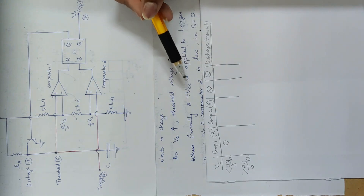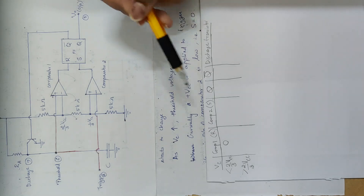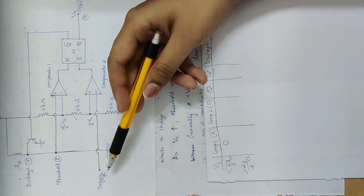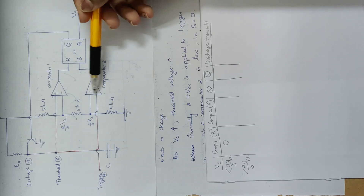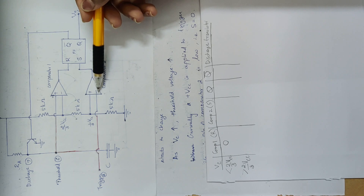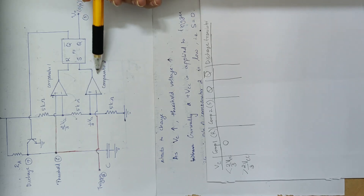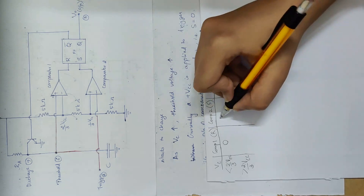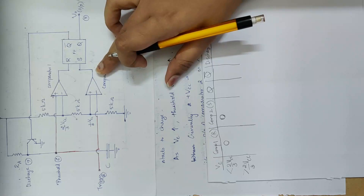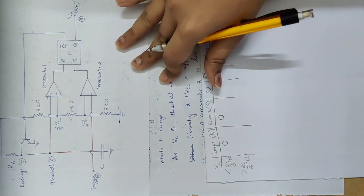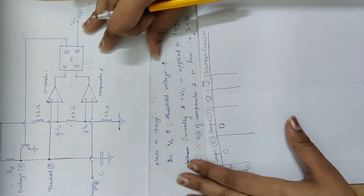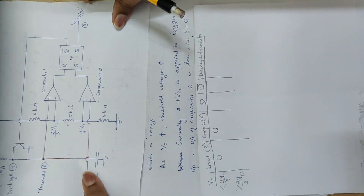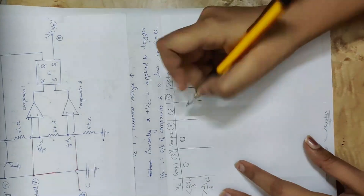Initially, we give threshold voltage plus Vcc to the trigger input. We trigger the positive voltage. The output is zero, that is low. R and S are zero. Q and Q bar values from the R-S flip-flop show no change when R and S are both zero.